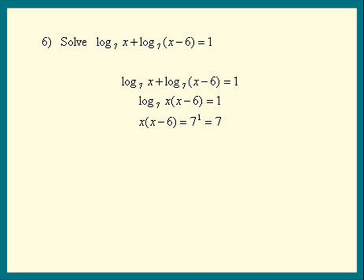To solve for x, multiply everything out and make one side 0. We get x squared minus 6x equals 7. x squared minus 6x minus 7 equals 0. And that factors nicely into x minus 7 times x plus 1.